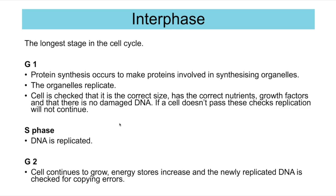The last part of interphase is G2, when the cell continues to grow so that when it splits the two new cells are the same size as the original. Energy stores are increased and the newly replicated DNA is checked for any copying errors. If errors are found they are either corrected or the cell is destroyed to prevent mutations from being replicated in multiple cells.